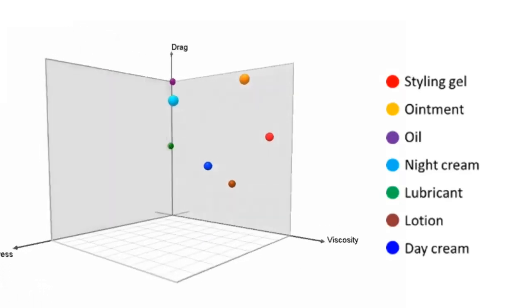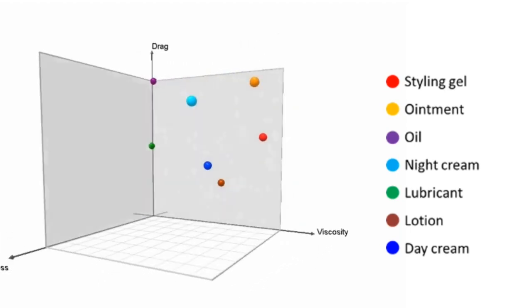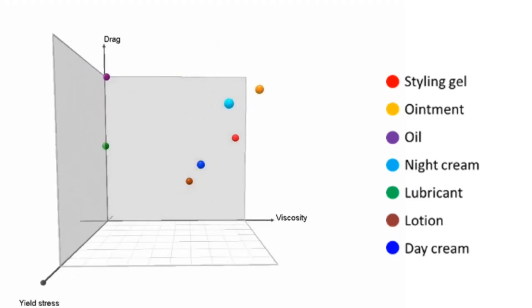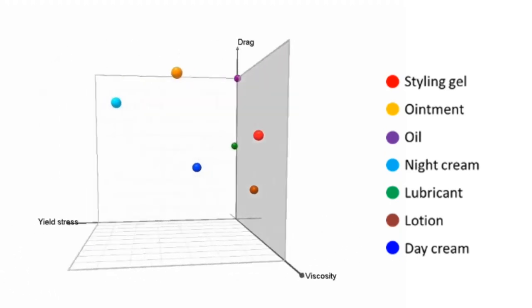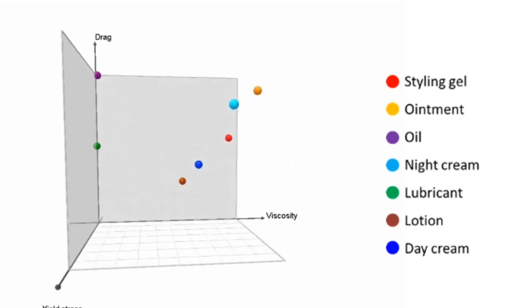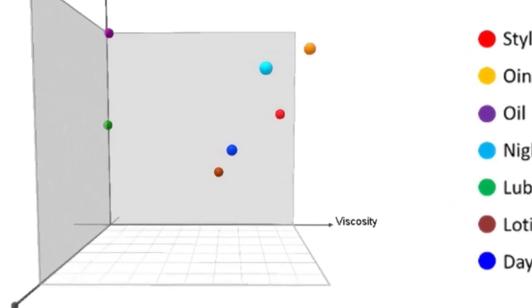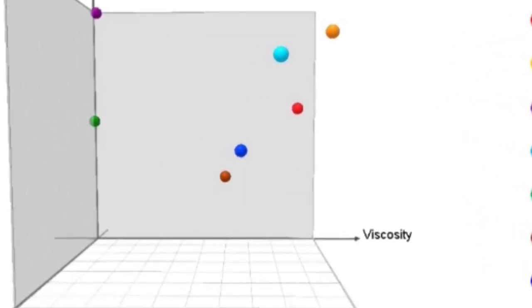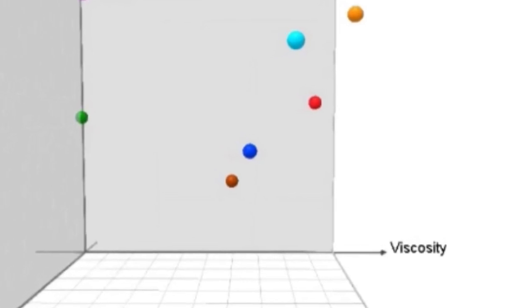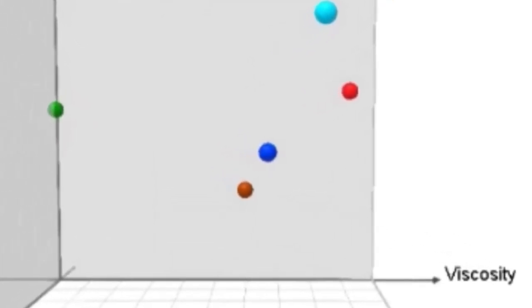So when we combine these three metrics together to generate this three-dimensional scatter plot, it gives us a nice visual indication of where these individual product types are located within that space. What we could then do is, if we're interested in, say, day creams, we could zoom in on the day cream area, get a bunch of different day creams, do the same thing, characterize them, add them to this plot, and look into much more granularity and detail as to where the day creams sit in that space.